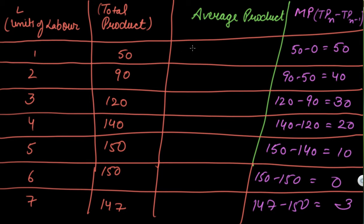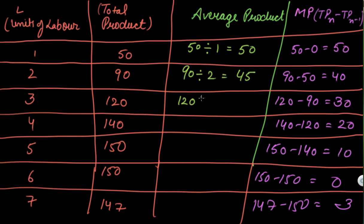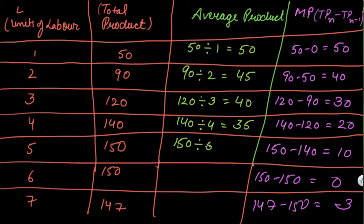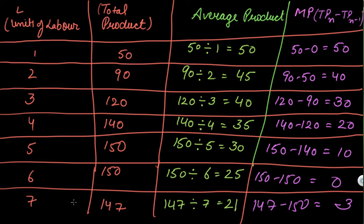Now let's calculate the average product by dividing total product by number of variable factors used: 50 divided by 1 is 50; 90 divided by 2 is 45; 120 divided by 3 is 40; 140 divided by 4 gives 35; 150 divided by 5 gives 30; 150 divided by 6 gives 25. This is how you calculate average product and marginal product from total product and the number of variable factors given.